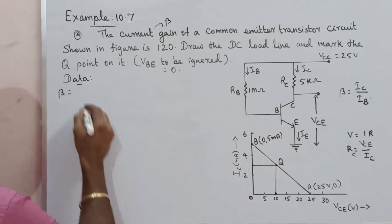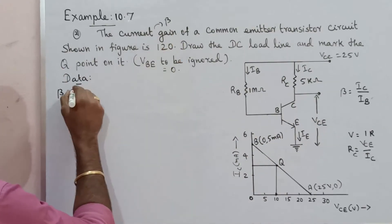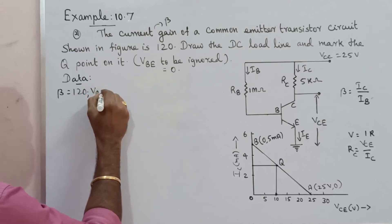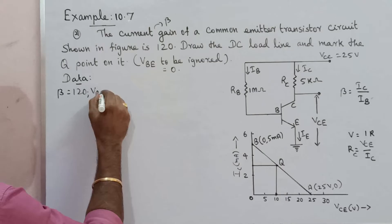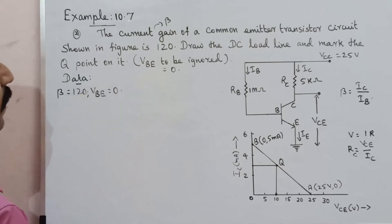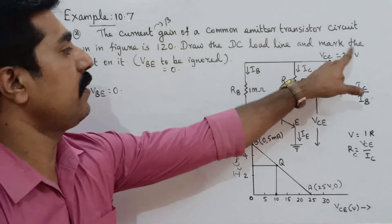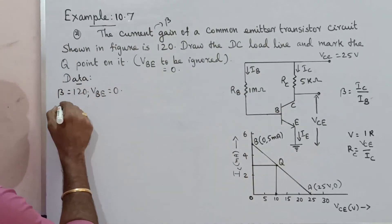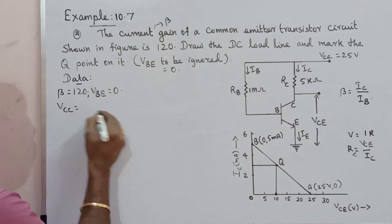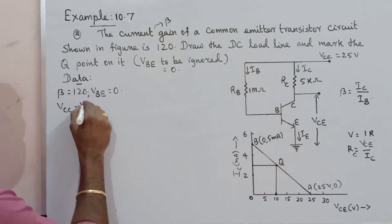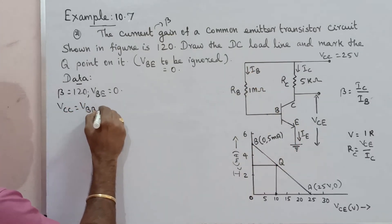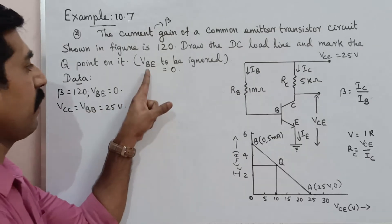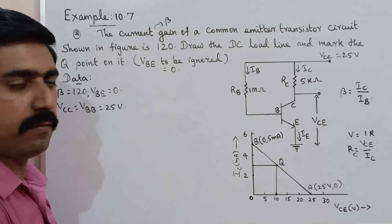Beta is equal to 120. VBE is zero, so we ignore it. We need the supply voltage VCC. The input voltage VB is almost equal to 25 volts, and VBE is approximately 0.